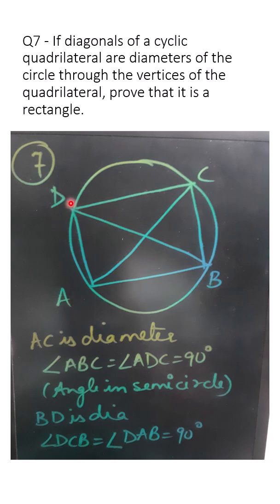Similarly BD is a diameter. So angle DCB and angle DAB will also be 90 degrees. Same, angles in a semicircle.